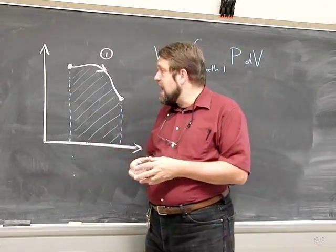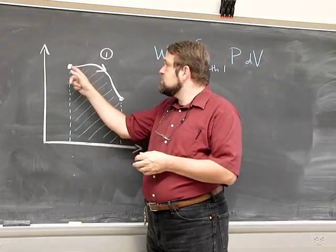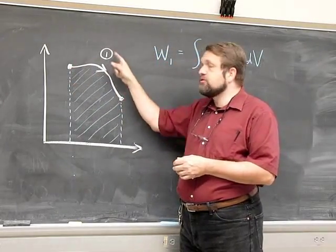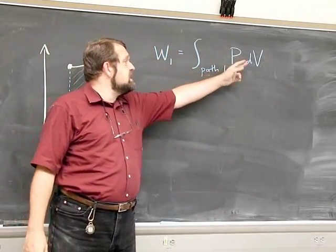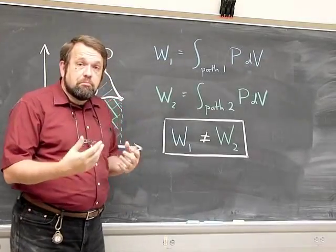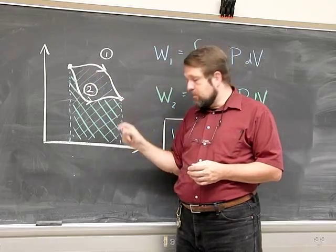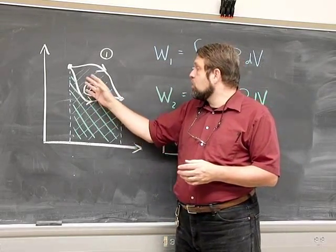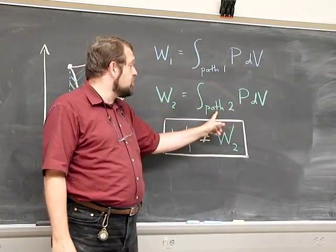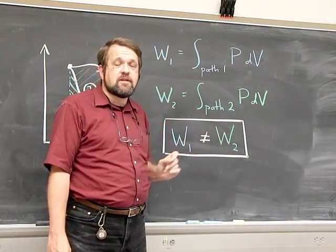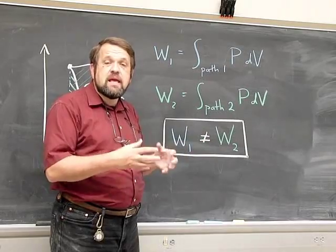This explains why the work done by the system depends on the whole process and not just the beginning and ending state. Consider a path in the PV plane — call it path one — going from an initial to a final state. The work is the area under that curve. A second process with the same beginning and ending states but a different path will have a different area under its curve. So W1 is not the same as W2, even though both processes start and stop at the same points.